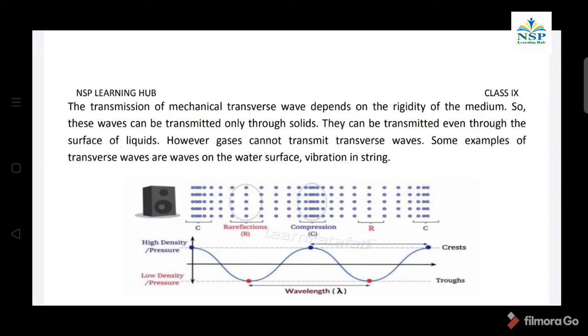The transmission of mechanical transverse waves depends on the rigidity of the medium. So, these waves can be transmitted only through solids. They can be transmitted even through the surface of liquids. However, gases cannot transmit transverse waves. Some examples of transverse waves are waves on water surface and vibration in string.